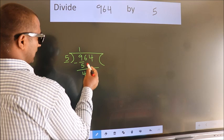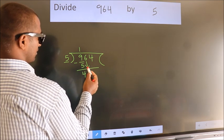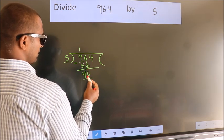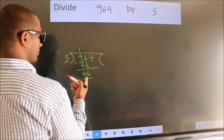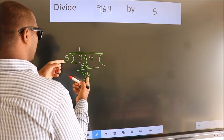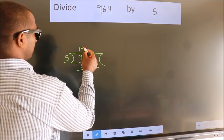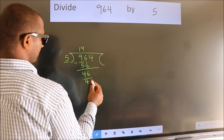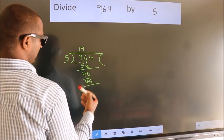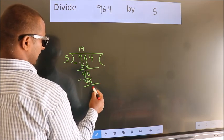After this, bring down the beside number. So 6 down. So 46. A number close to 46 in 5 table is 5 nines 45. Now we subtract. We get 1.